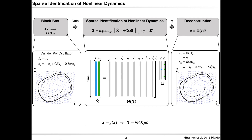We could then perform a sparse promoted least squares algorithm to solve for a sparse vector c, which selects the few nonlinear terms from the feature library to represent the left-hand side derivative. Finally, we could reconstruct the system's dynamics and get an interpretable model from data.